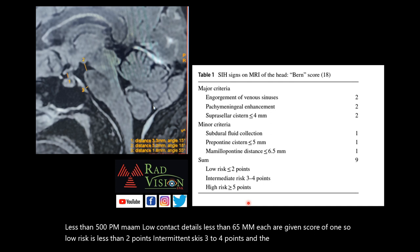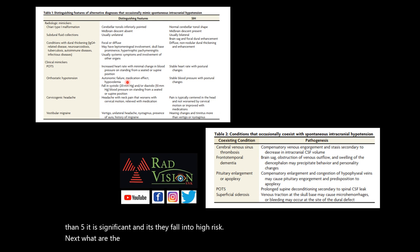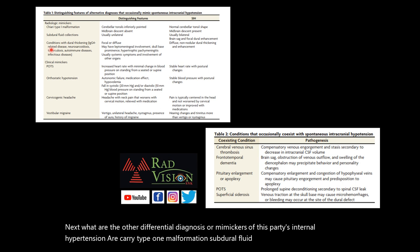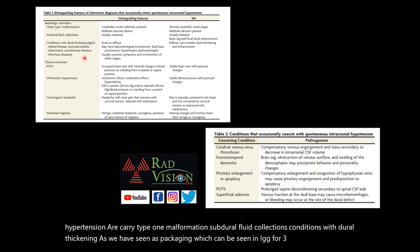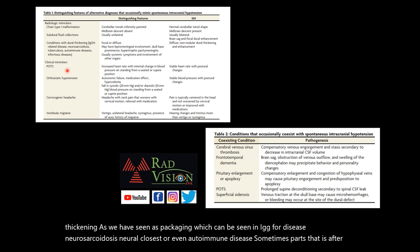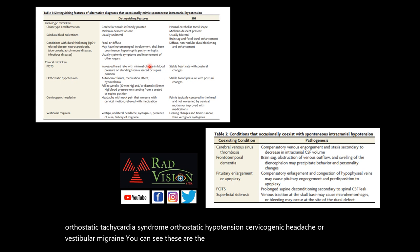Other differential diagnoses or mimickers of spontaneous intracranial hypotension include Chiari type 1 malformation, subdural fluid collections, conditions with dural thickening such as IgG4 disease, neurosarcoidosis, neurotuberculosis or autoimmune disease, POTS (postural orthostatic tachycardia syndrome), orthostatic hypotension, cervicogenic headache, or vestibular migraine. You can pause the slide to see all the differentiating features.